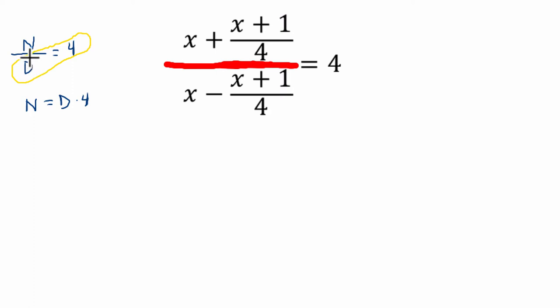This is always true. So here, except when d is 0, here we can say, all right, well, that means our numerator, x plus x plus 1 over 4, has to equal the product of 4 and this denominator here: x minus x plus 1 over 4 times 4. And already, this is looking a lot more manageable.